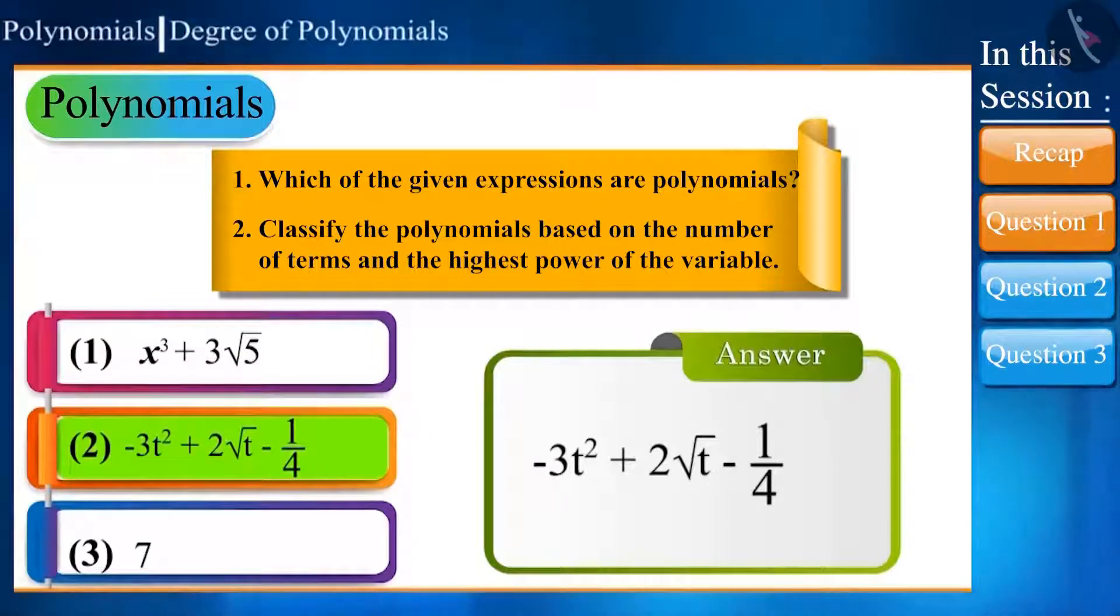In the second expression, minus 3t square plus 2 square root of t minus 1 by 4, there is only one variable t whose highest power is 2. But if we see the second term square root of t, its power is not a whole number.